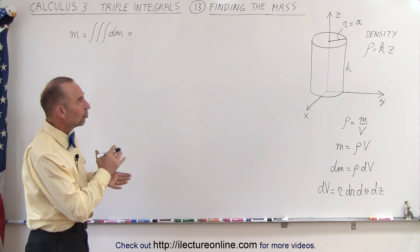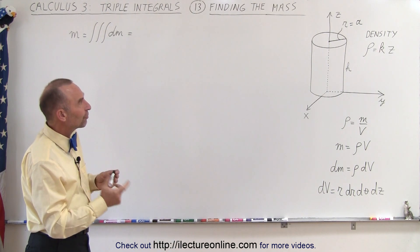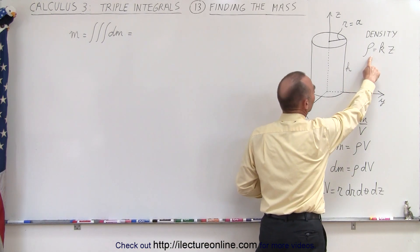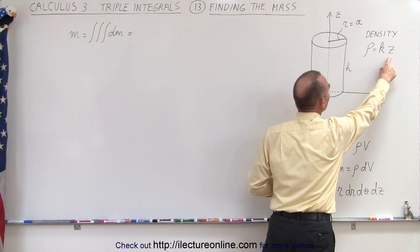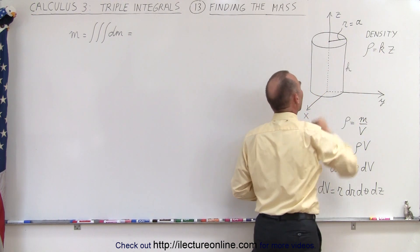Since it's a cylinder, we probably should use cylindrical coordinates. What we're trying to do here is find the mass of a cylinder that has variable density. The density is equal to a constant times z. In other words, the density increases as you go up in height.